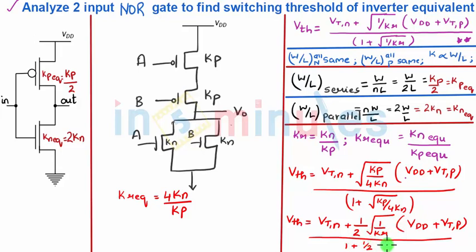Taking 4 out of the square root gives a factor of 1/2, so the final expression for the switching threshold of a 2-input NOR gate inverter equivalent is obtained by substituting the corresponding KN equivalent and KP equivalent values. Hope you have understood — stay tuned for further clips, and thank you.